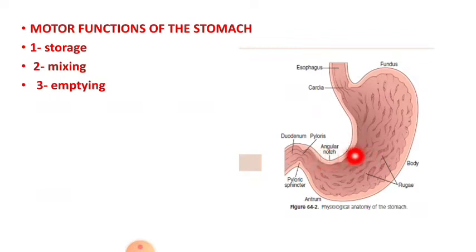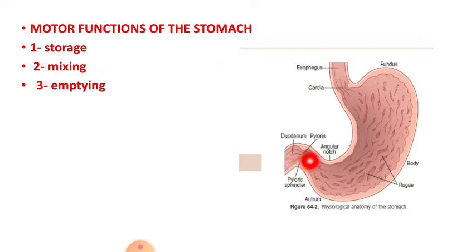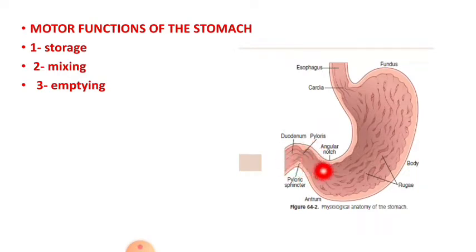The intense peristaltic wave in the antrum reaches the pylorus. The pylorus acts as a sphincter — its size is small — so when the peristaltic wave reaches the pylorus, only a small amount of contents can enter the small intestine through the duodenum, while the rest is stored in the stomach.